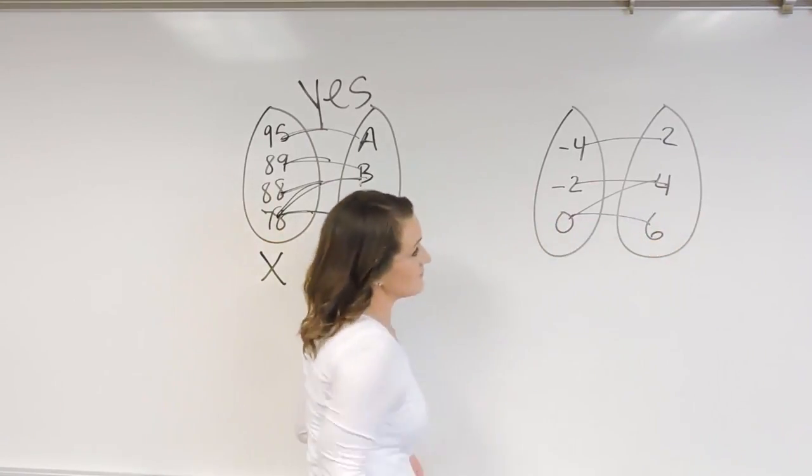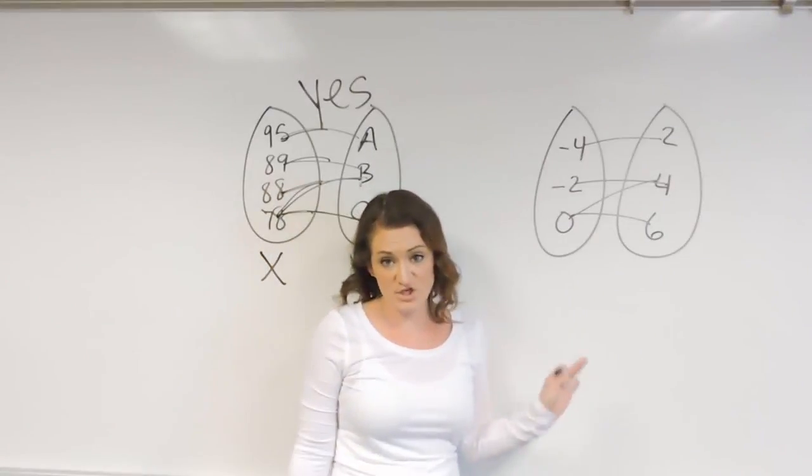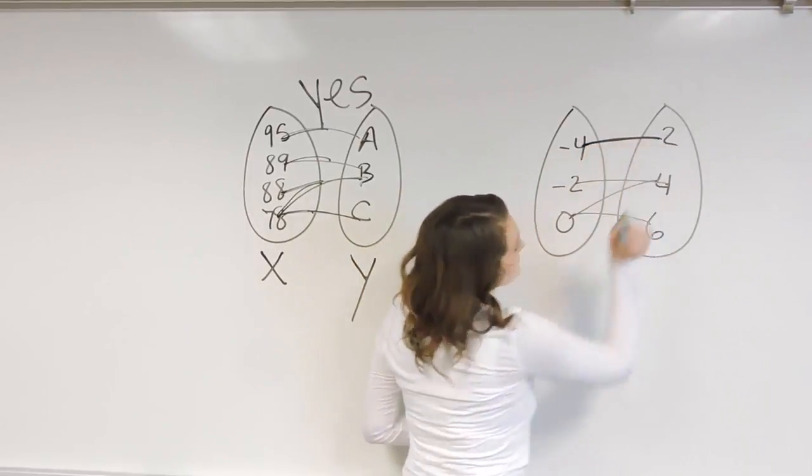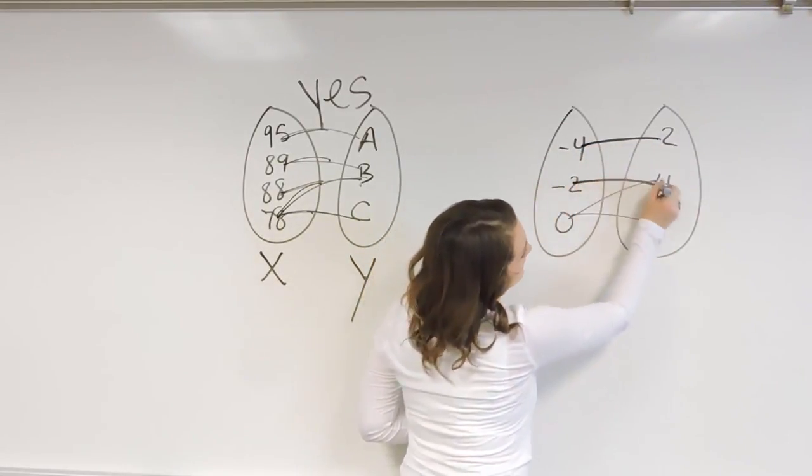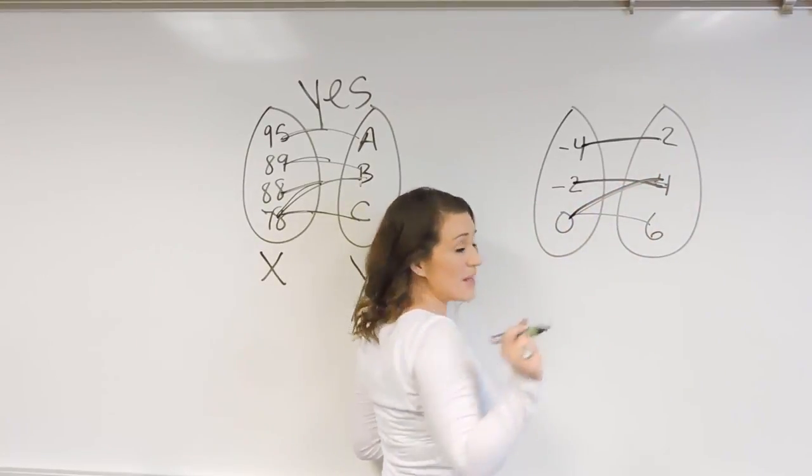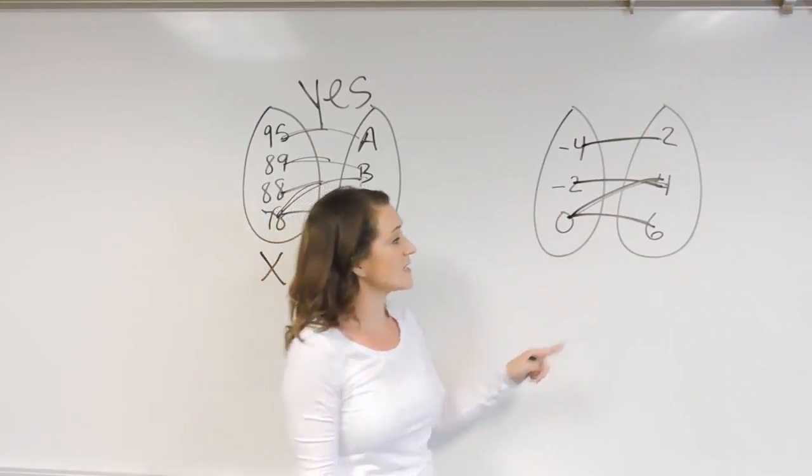Taking a look at this example we have over here then, same question: is it a function or not? Let's take a look. The negative 4 goes to the 2, negative 2 goes to the 4, 0 goes to the 4, but pay attention here. 0 also goes to the 6.